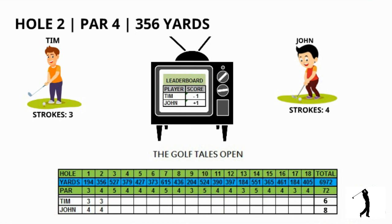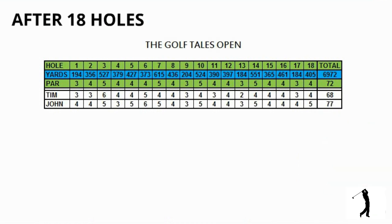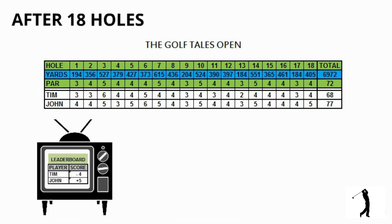As each hole progresses, you keep track of the performance of each player against par. So at the end of 18 holes, we need to check what is the total score of each player — that is, how many strokes did each player take to complete 18 holes. So at the end of 18 holes, the aggregate score of Tim is 68 and that of John is 77. And as I mentioned at the start, the player with the lower score wins. When you consider the score against par — that is par 72 at the end of 18 holes — Tim has scored 4 under par, that is minus 4. And John has scored 5 over par, that is plus 5. Hence, Tim is the winner.